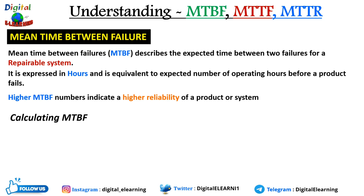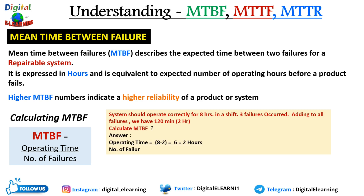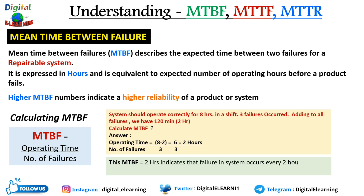The equation for calculating MTBF is simple: total operating time divided by number of failures. For example, a system operates for an eight-hour shift with three failures totaling 120 minutes (two hours) of downtime. Operating time is eight hours minus two hours of failure time, giving six hours. Divided by three failures, the MTBF is two hours.